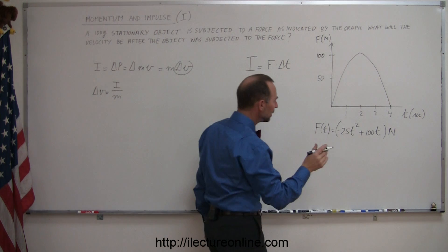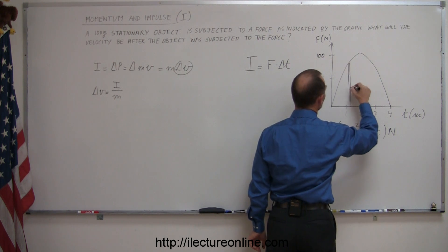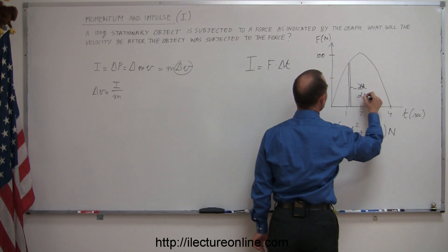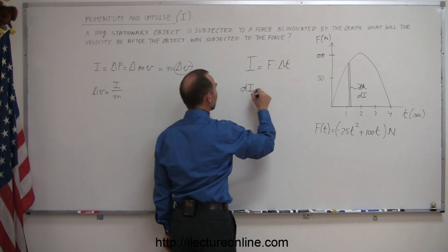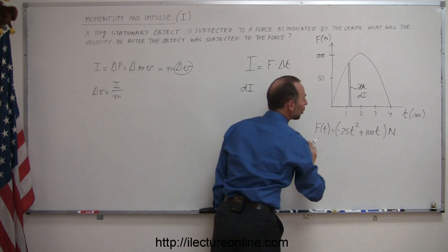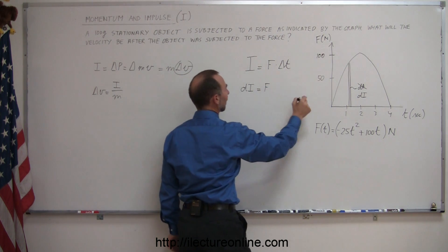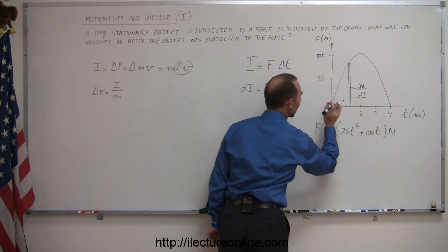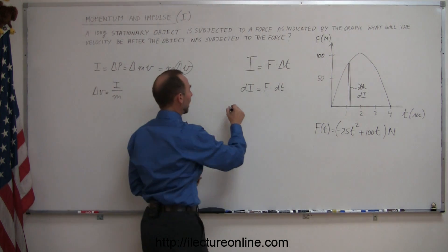What we need to do here is take a small little sliver of this area and call it dA, or in actuality we can call it dI, a small amount of impulse. We can say that the dI, the impulse caused by this small moment in time, is equal to the force at that very moment in time times the dt, the small amount of time that has elapsed.